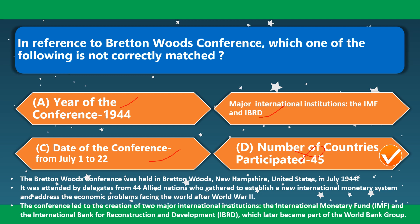The Bretton Woods Conference was held in Bretton Woods, New Hampshire, United States in July 1944. It was attended by delegates from 44 allied nations who gathered to establish a new international monetary system. The conference led to the creation of two major international institutions: the International Monetary Fund and the International Bank for Reconstruction and Development (IBRD), which later became part of the World Bank Group.